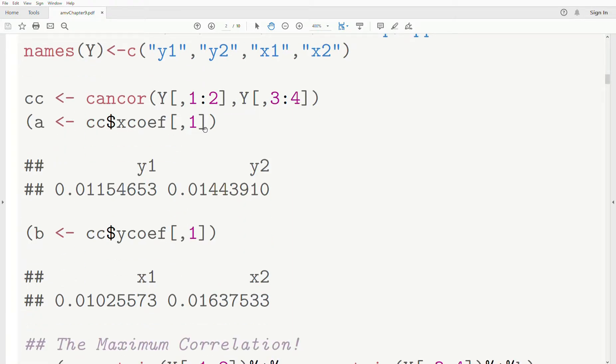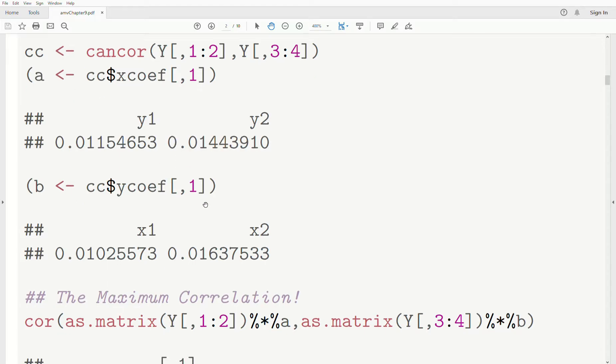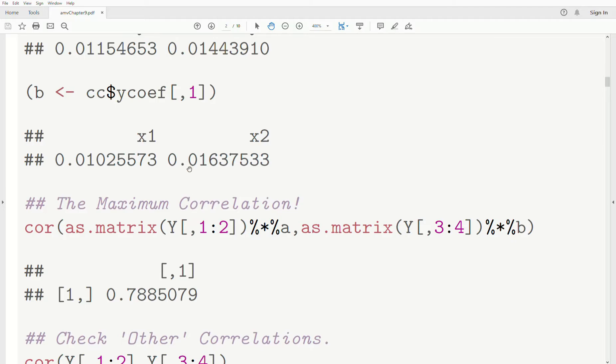So we grab the coefficients for this first linear combination. This is A, what makes it the maximum. And this is it, 0.011, 0.014. Those are the coefficients for our linear combination. And then we grab the second set of coefficients, store it to B, and that's the coefficients for our second linear combination.